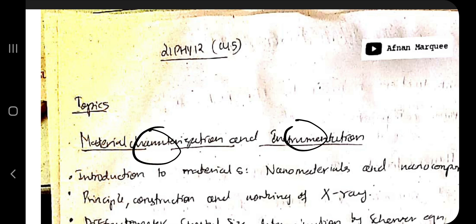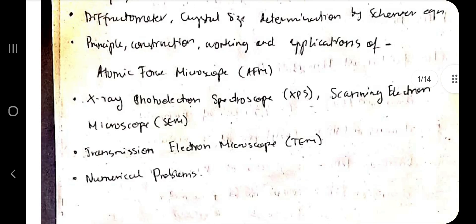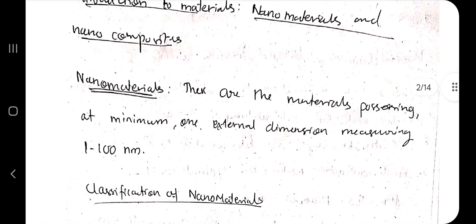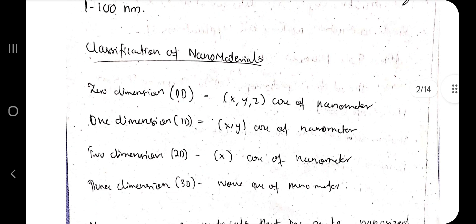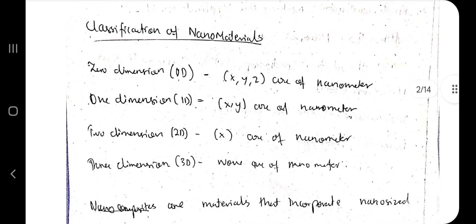There are a few experiments you need to know before appearing for the exam. Let's get started with the first topic: what is a nanomaterial? Nanomaterials are materials which have at least one dimension in the range of one to one hundred nanometers. The classification is zero-dimension, one-dimension, two-dimension, and three-dimension.